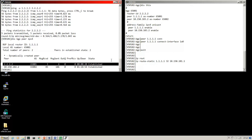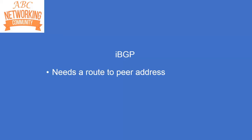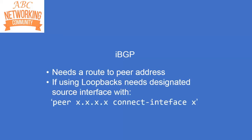What I really wanted to show you is that BGP doesn't need an IGP underneath it. To recap: with iBGP, it's common practice to use loopbacks for your BGP peer sessions. But remember that your router needs a route to the destination — a route in its routing table to the destination peer address. Also, if you're using loopbacks, you need to designate the source interface with the peer connect interface command, as we've seen.